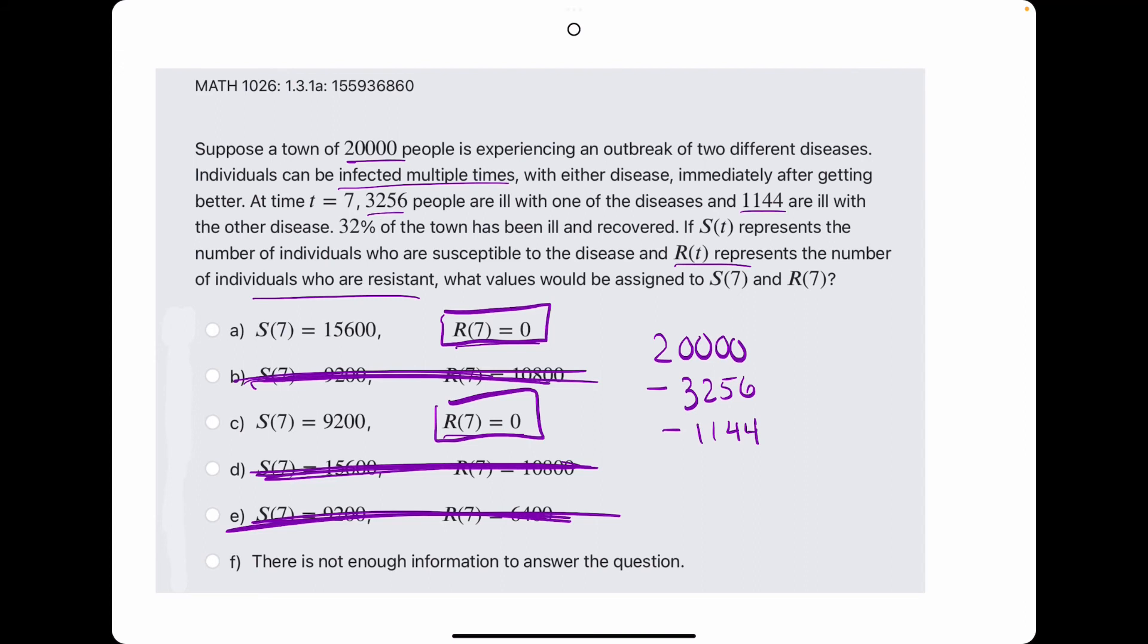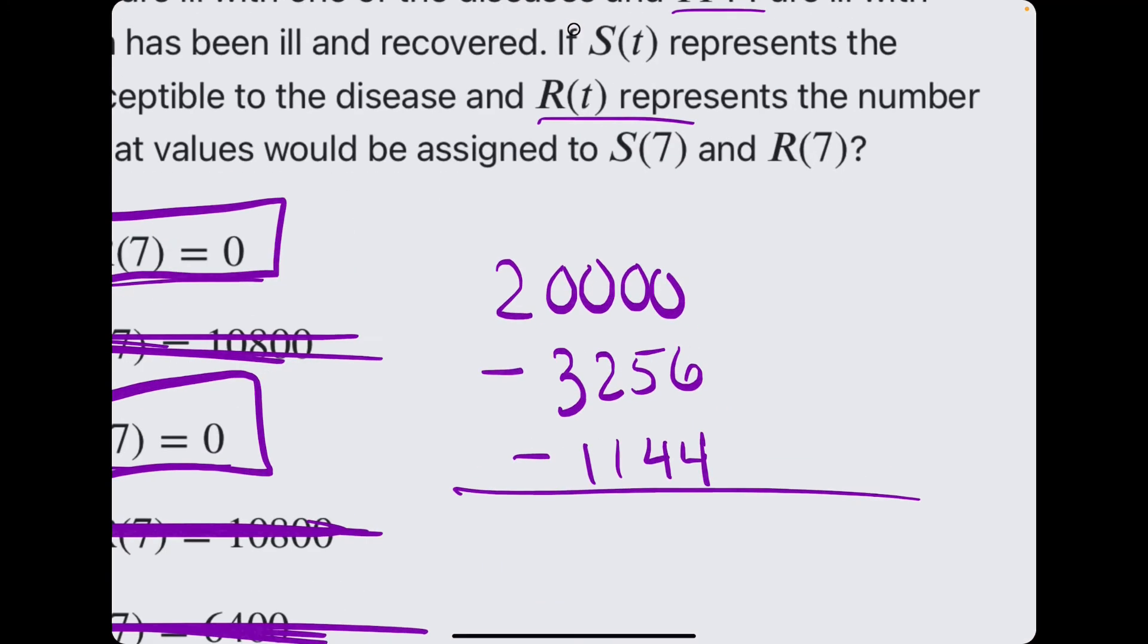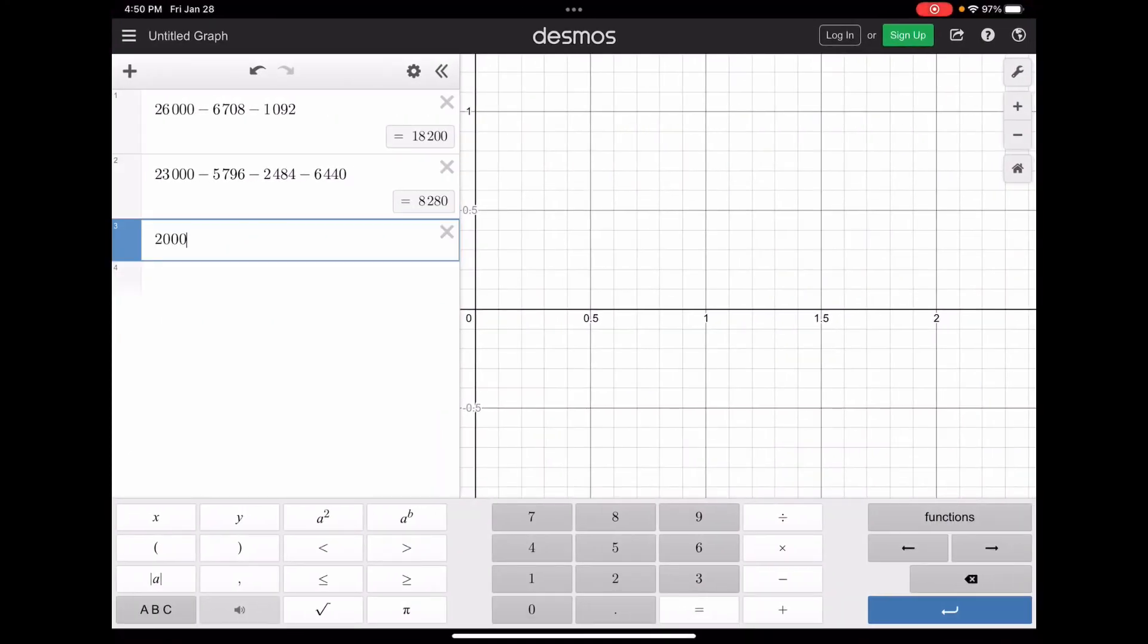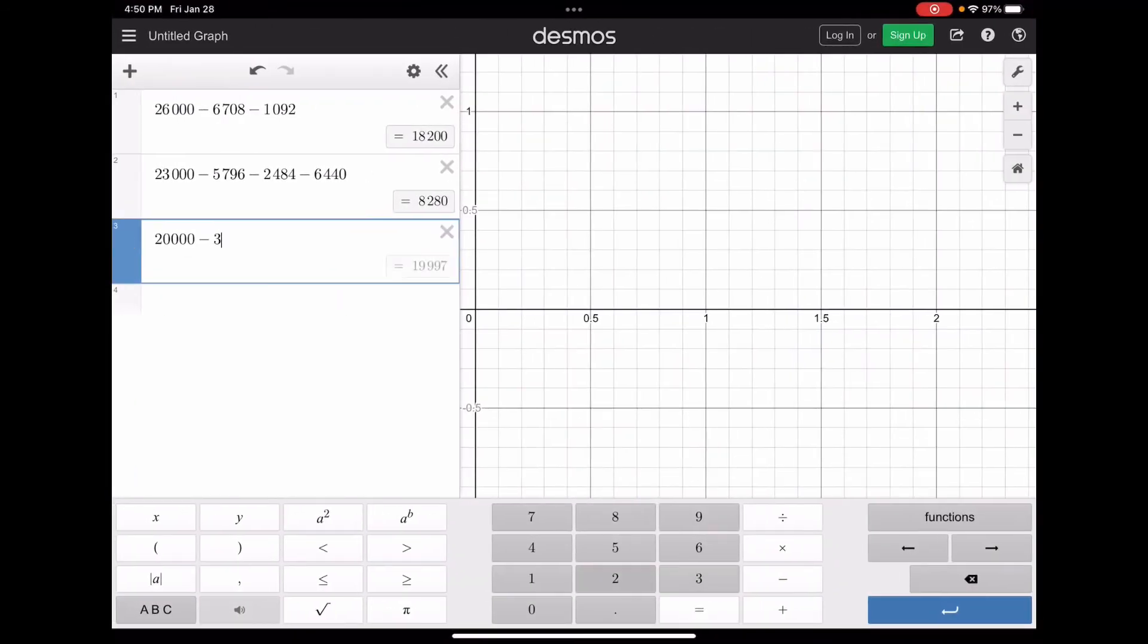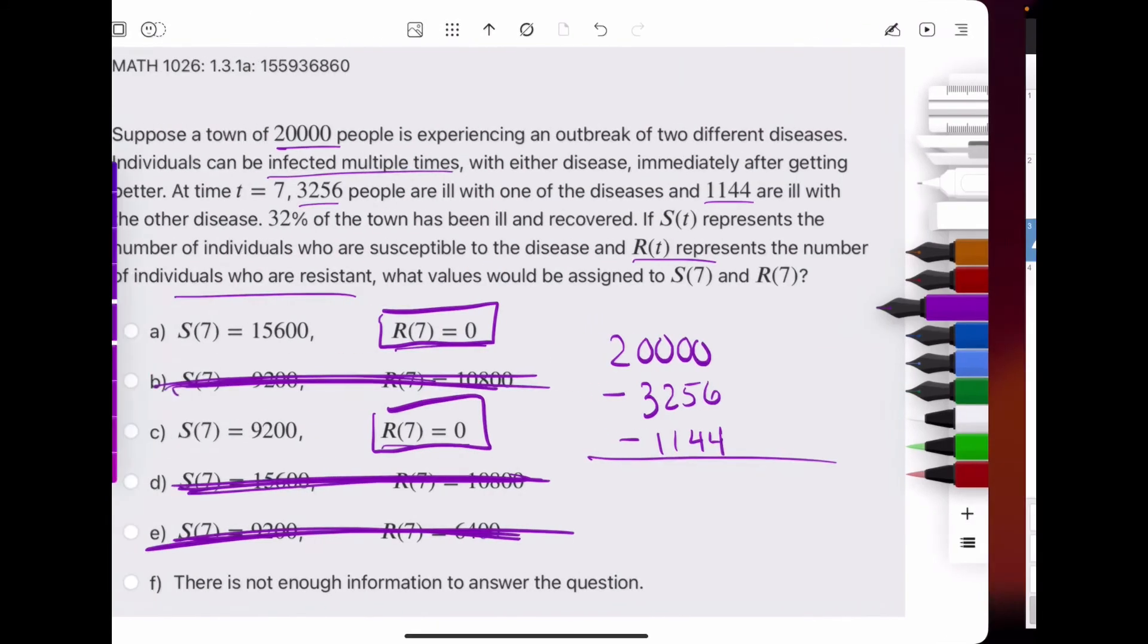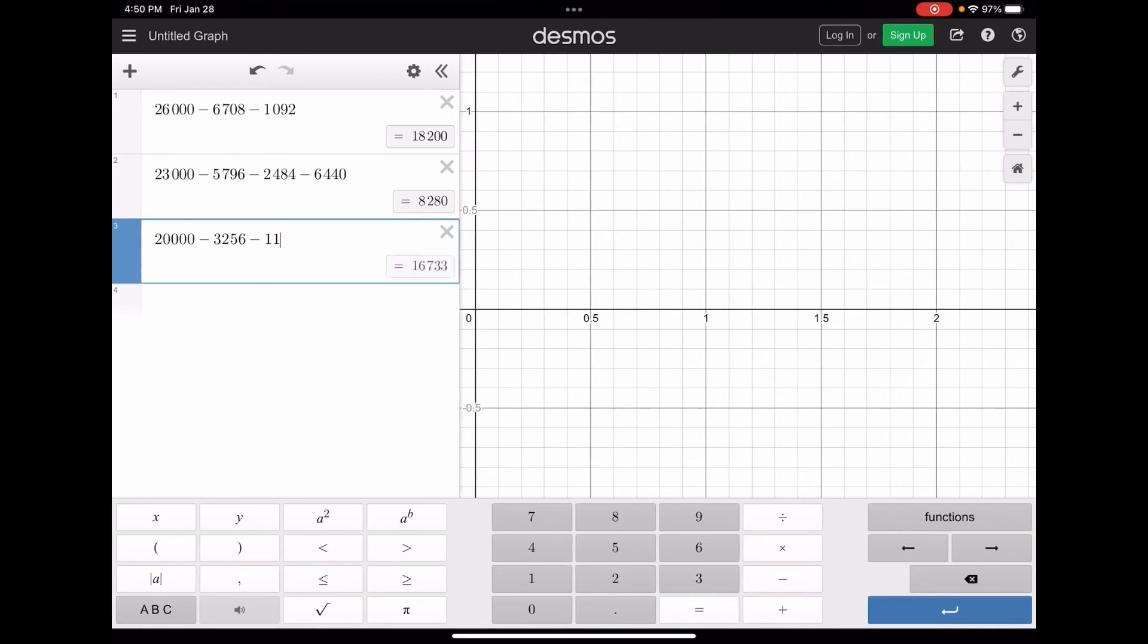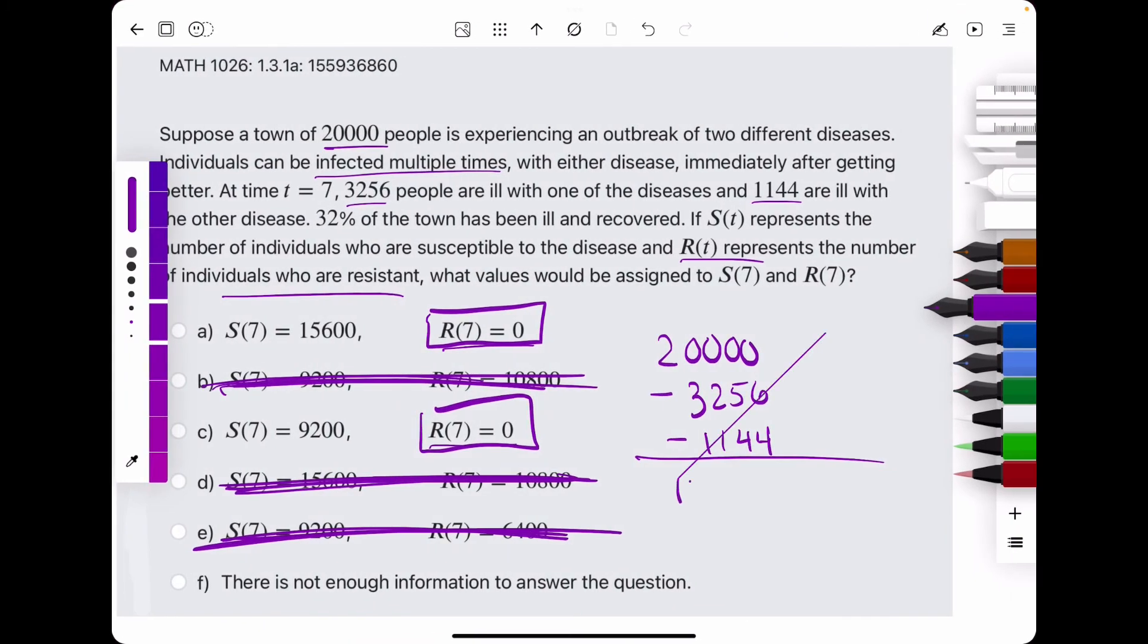And then because the rest of the town has been ill and recovered, however, they can be infected multiple times, they are still susceptible to getting either disease. So, really just subtracting the number of people who are ill with either disease is all we need to do. So, 20,000 minus 3,256 and 1,144 gives us 15,600.